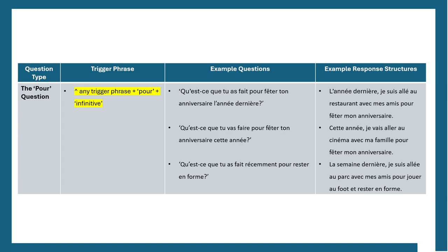Finally, the 'pour' question — some questions will have the word 'pour' in them directly. For example: 'Qu'est-ce que tu as fait pour fêter ton anniversaire l'année dernière?' — What did you do to celebrate your birthday last year? Response: 'L'année dernière, je suis allée au restaurant avec mes amis pour fêter mon anniversaire.' For the future version: 'Qu'est-ce que tu vas faire pour fêter ton anniversaire cette année?' — we've got 'vas' here, and with 'je vais', notice that V occurring, which points towards the future.